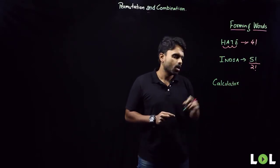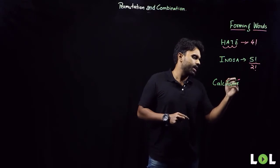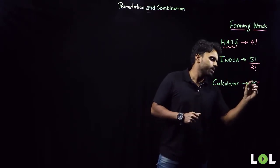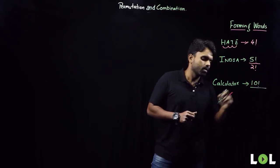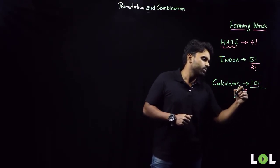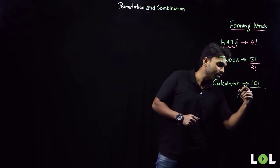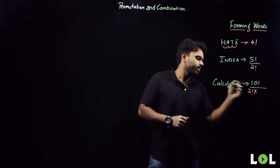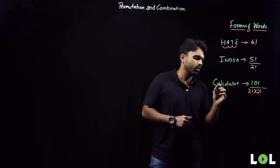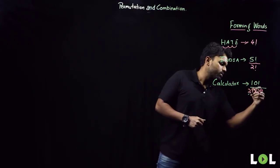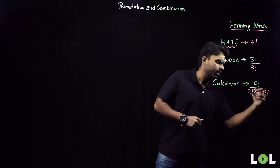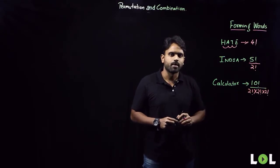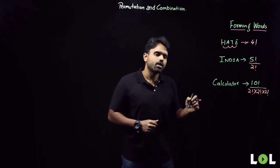If I have the word CALCULATOR — that is ten letters — they can be rearranged in ten factorial ways. Now for repetition: C is repeating two times, so I divide by two factorial. A is also repeating two times, so I divide by another two factorial. Any other repetition? No. So the answer is 10! ÷ (2! × 2!).